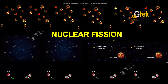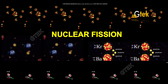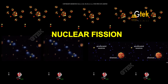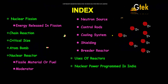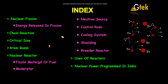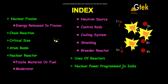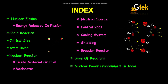Let's talk about nuclear fission. A nucleus or a centralized atom is getting segregated or separated — that's nuclear fission. Here is the index: we're going to talk about energy release in fission chain reactions, critical size, atom bomb, nuclear reactors, fissile particles, moderators, neutron source, control rods, cooling system, shielding, breeder reactor, and finally the uses of reactors and nuclear power programs in India.